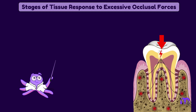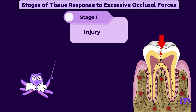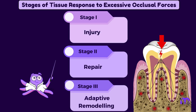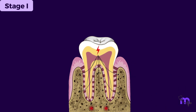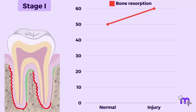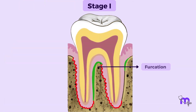Now let us understand how tissues respond to excessive occlusal forces. The tissue response takes place in three stages: stage 1 — injury, stage 2 — repair, and stage 3 — adaptive remodeling of the periodontium. In stage 1, as excessive occlusal forces fall onto the tooth, tissue injury occurs resulting in increased bone resorption and decreased bone formation. The areas most susceptible to injury are the furcations. Bone resorption is noted in areas of pressure and bone formation in areas of tension.